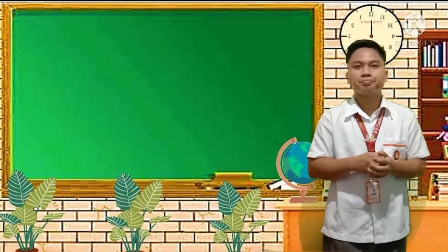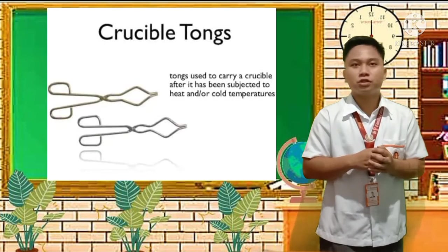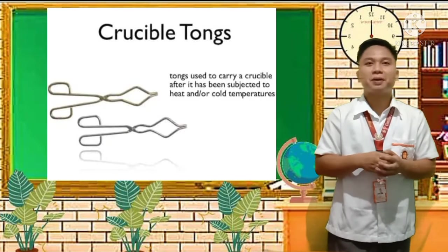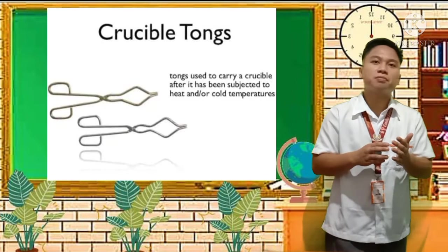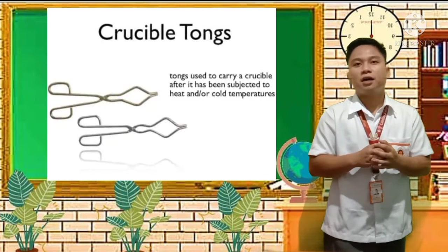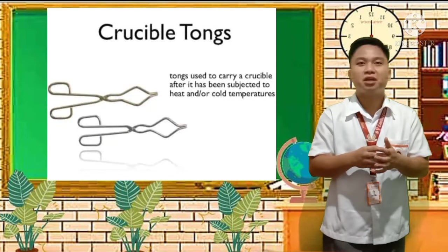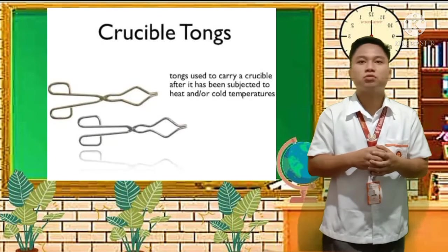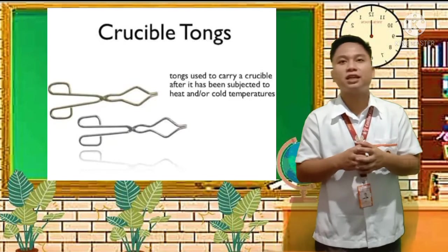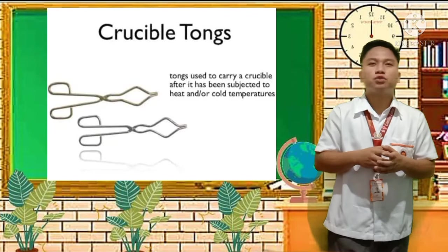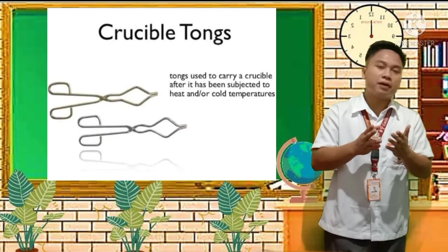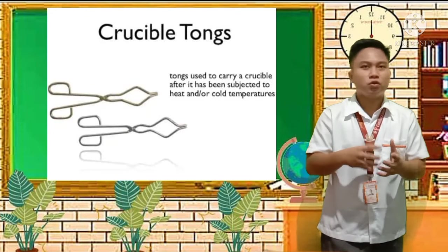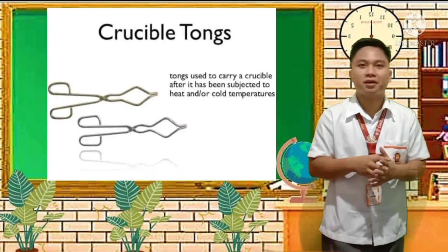Next we have crucible tongs. As you can see, it is similar to the beaker tongs — it also looks like scissors but with a different shape. The function is the same: tongs used to hold a crucible after it has been subjected to heat or cold temperature. Its purpose is to carry the crucible during experimentation.